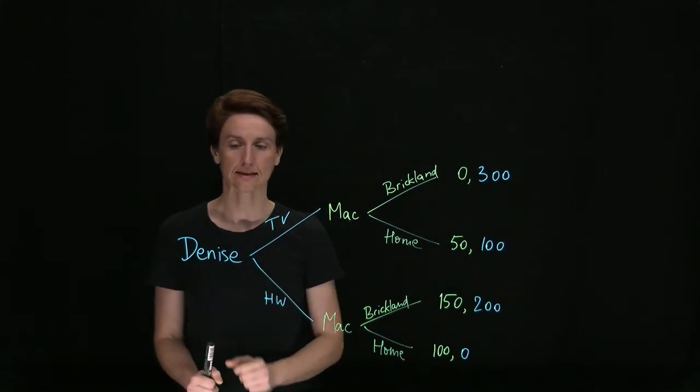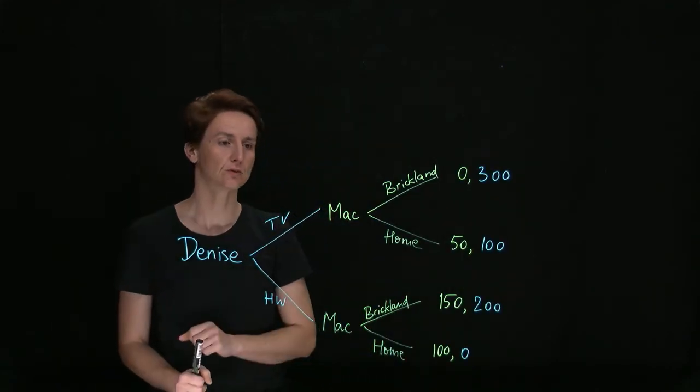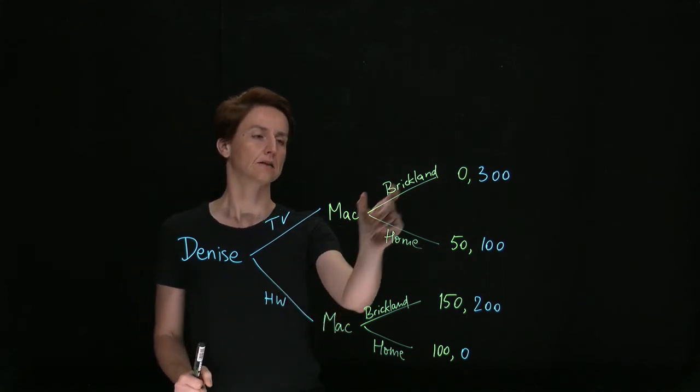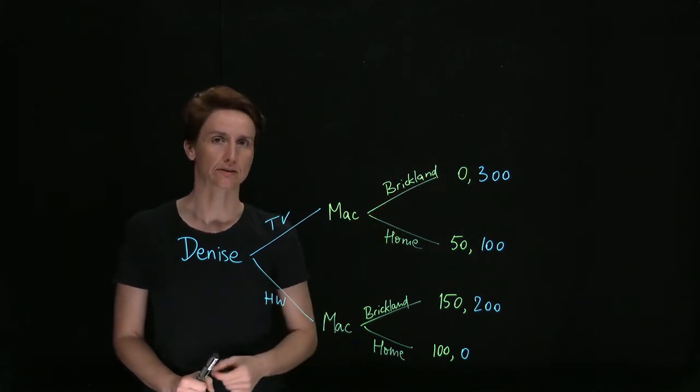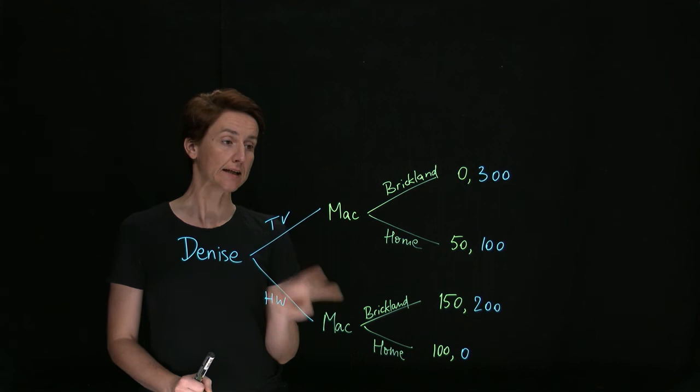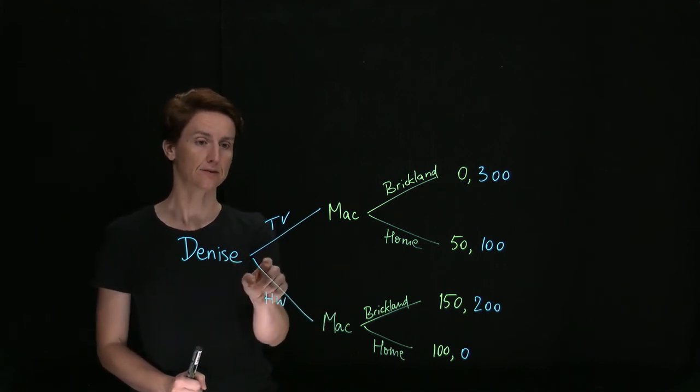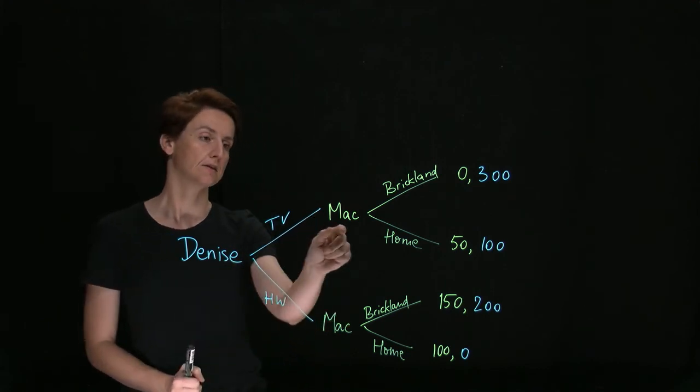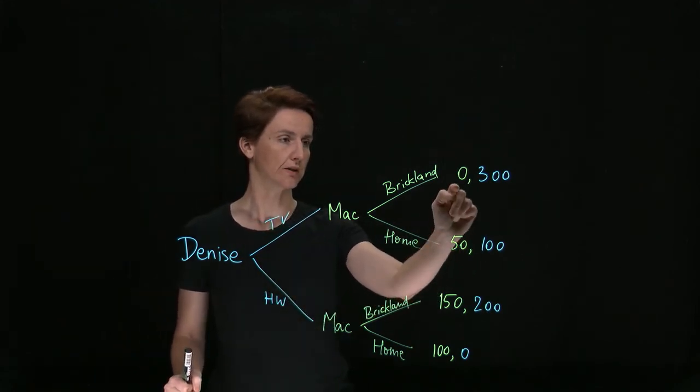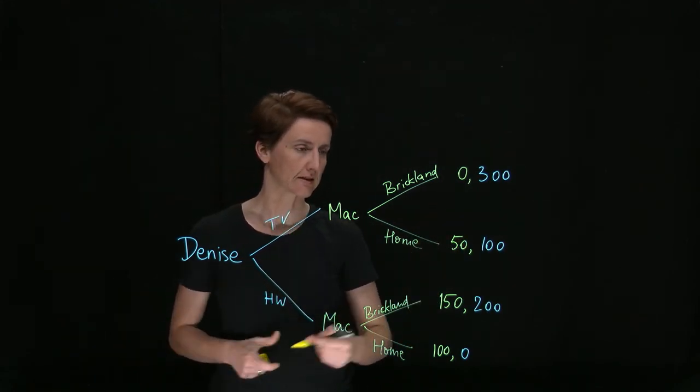I've now reversed the order so that Denise decides first what to do and then Mac will decide whether or not to take her to Brickland. Now, Denise can anticipate that if she watches TV, then Mac will choose to keep her at home because that is his higher payoff.